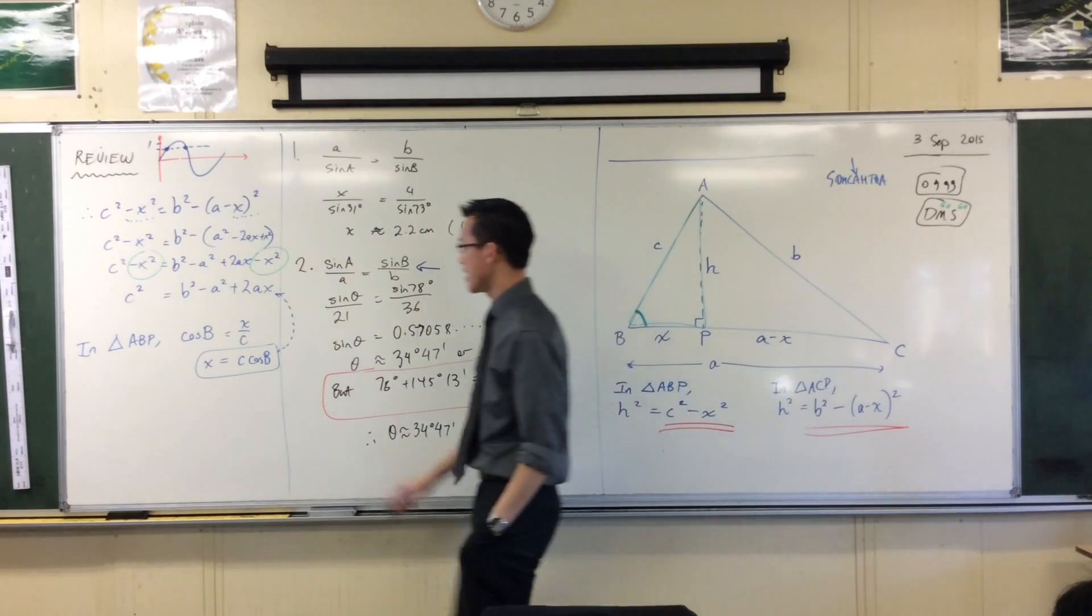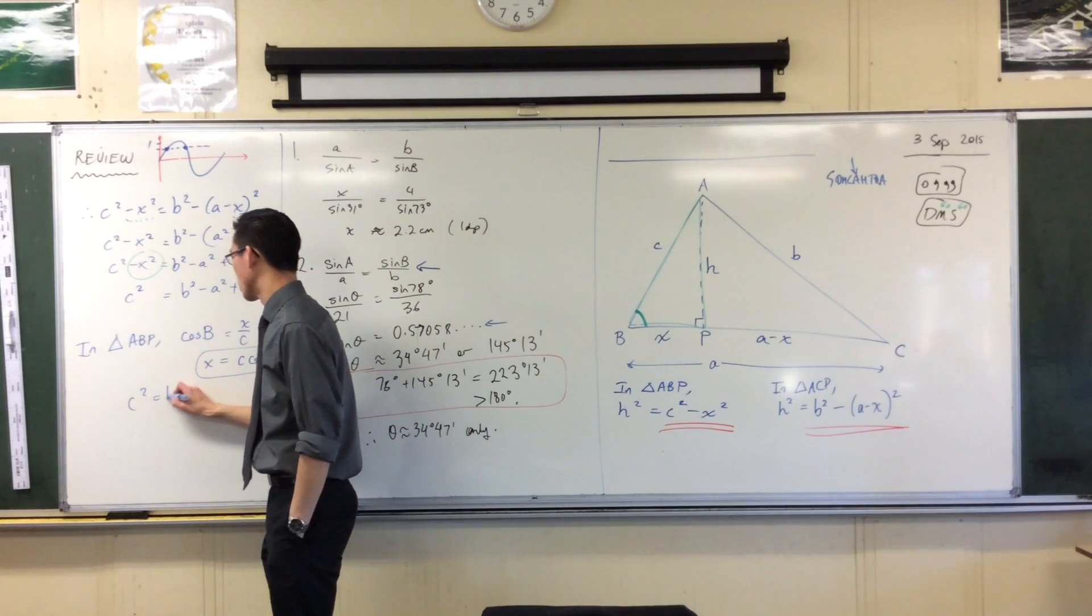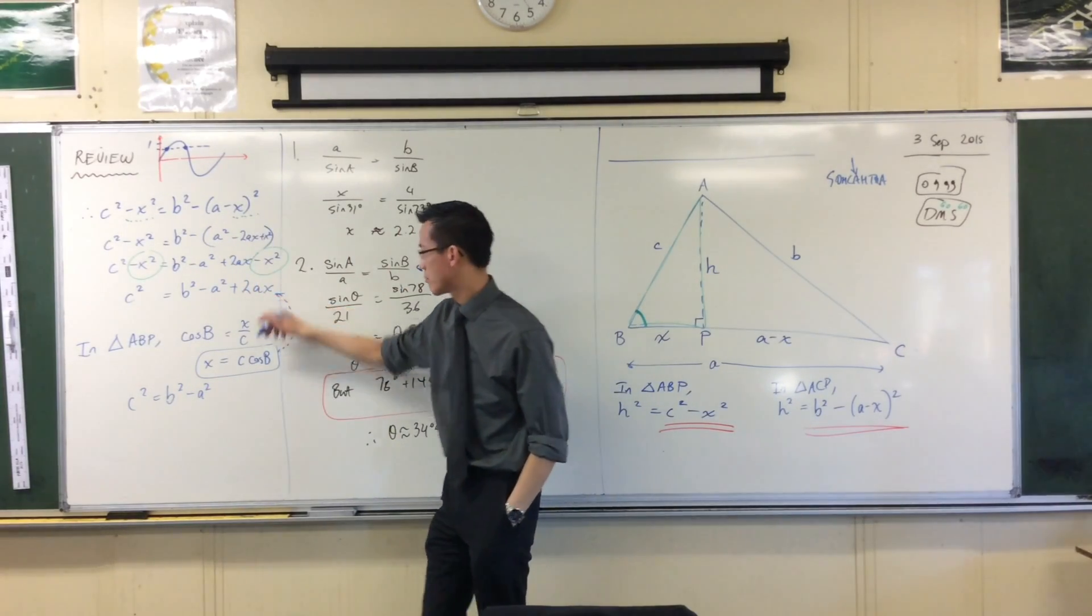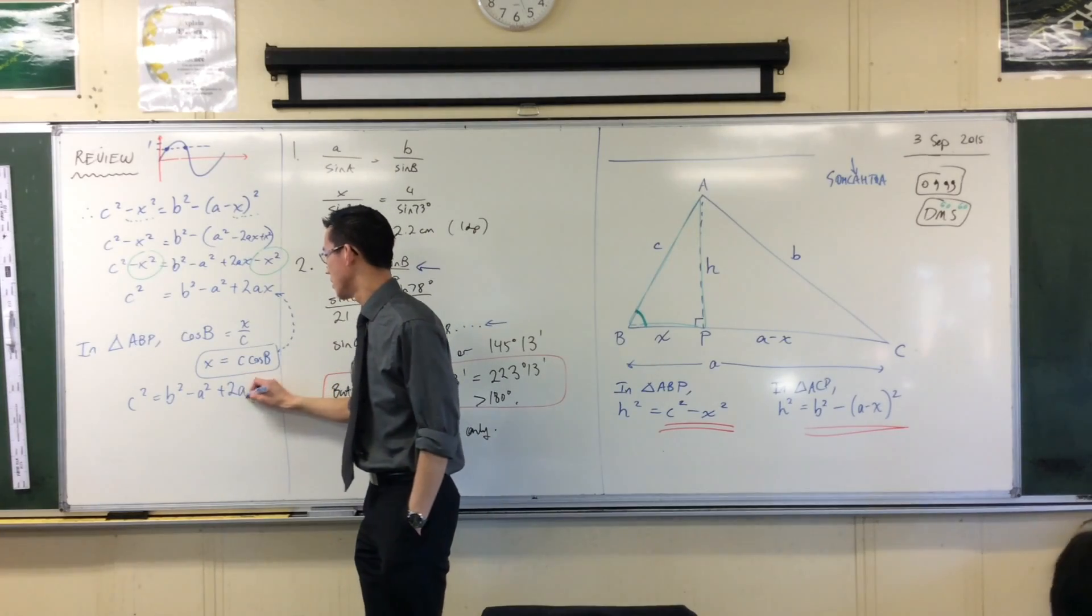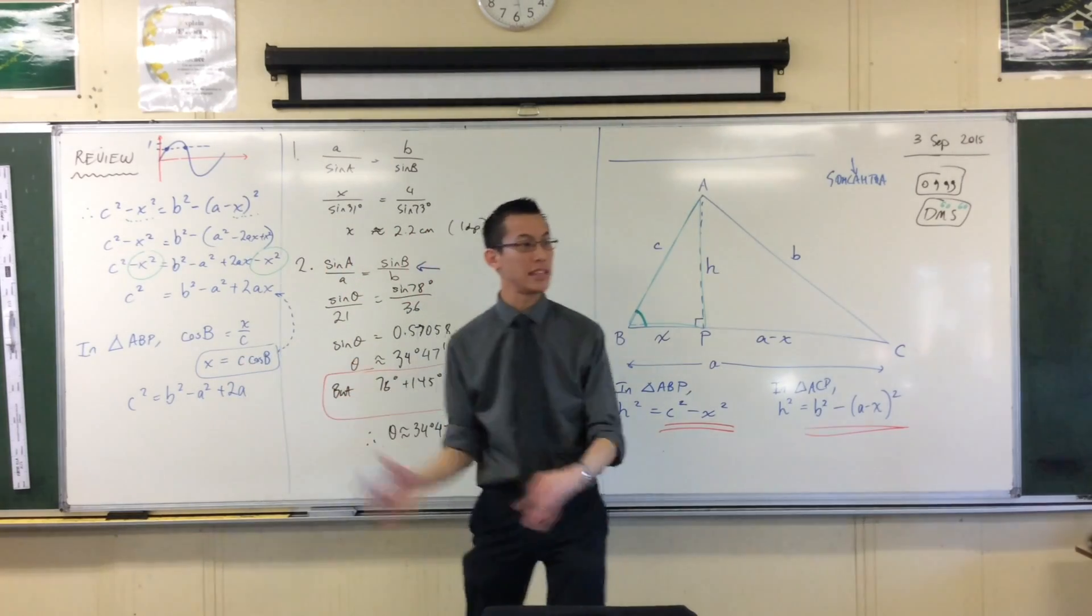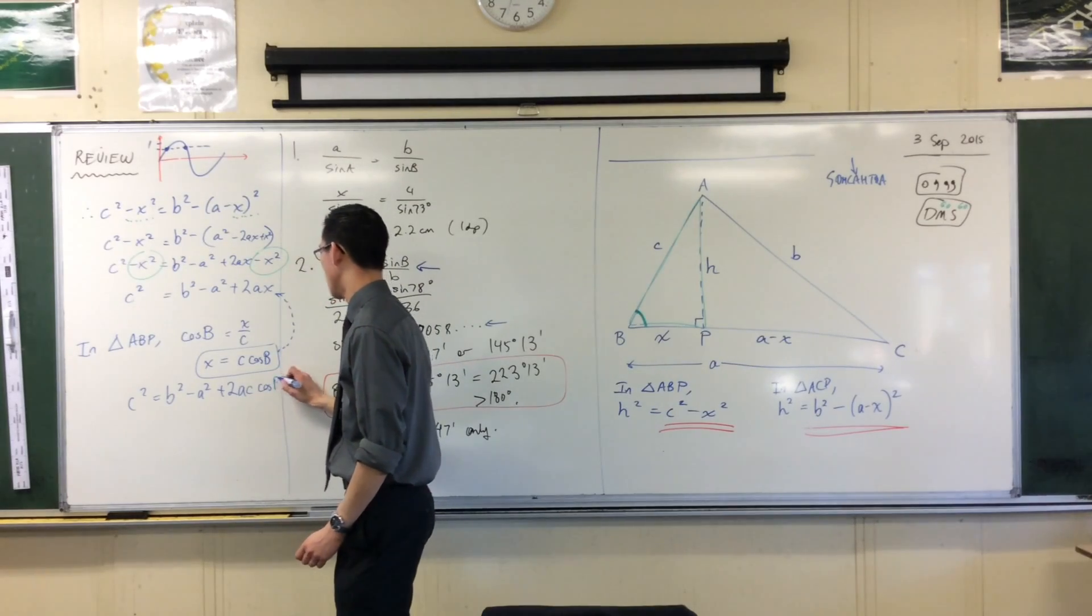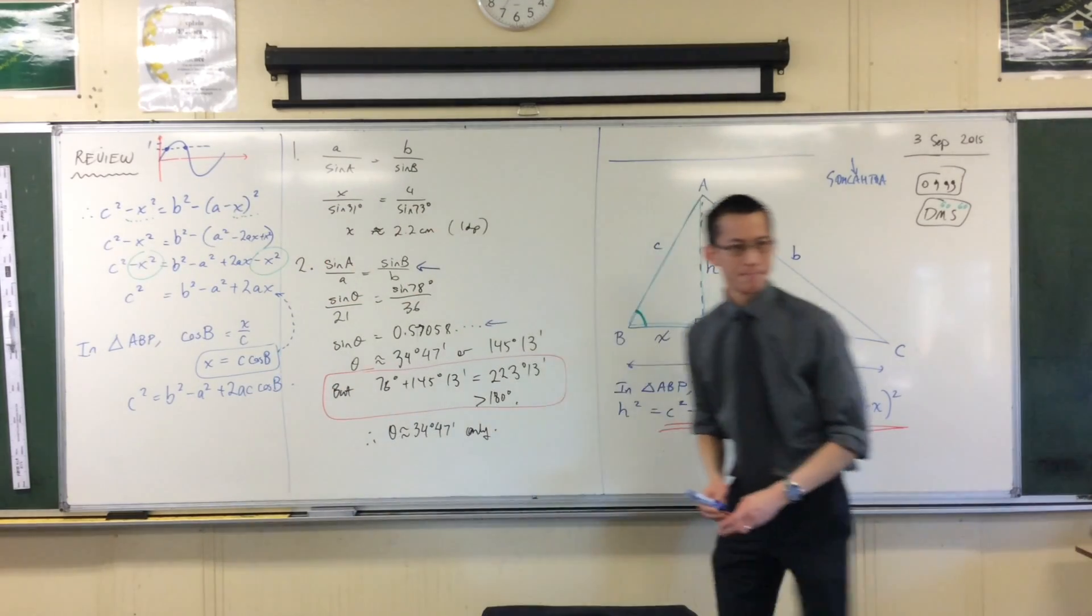So, I can say, c squared equals, let's have a look at this, 2a times this guy. This is what I'm replacing x with. c cos B.